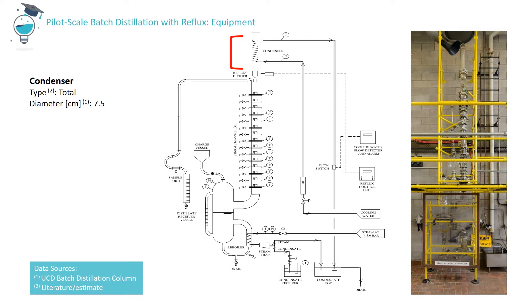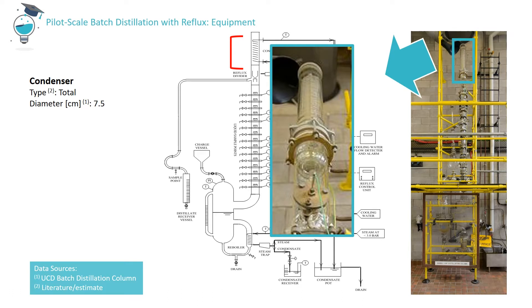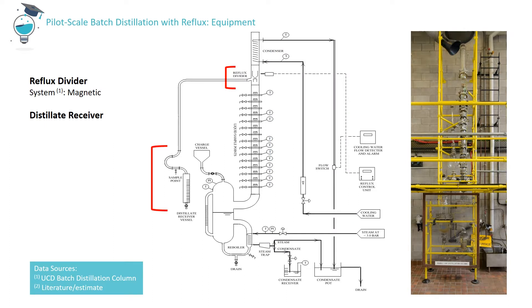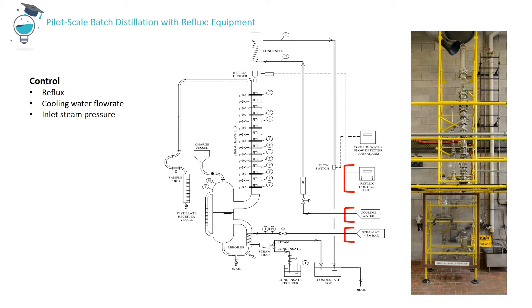At the top of the column there is a water-cooled condenser with an internal diameter of 7.5 centimetres. Just below the condenser is the magnetic reflux divider. Based on the specified reflux ratio it diverts the distillate from the condenser either to the distillate receiver or back to the column as reflux. To operate the column in total reflux — i.e. returning all condensate to the column — the magnet is inactive. The reflux controller is used to specify the reflux conditions, either total reflux or a finite value of reflux ratio. The cooling water flow rate can be manually adjusted using the cooling water valve. For safety reasons the system is equipped with a cooling water alarm which sounds if the water flow falls below a specified limit.